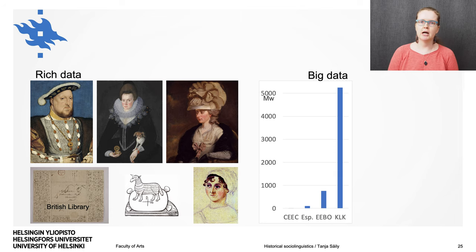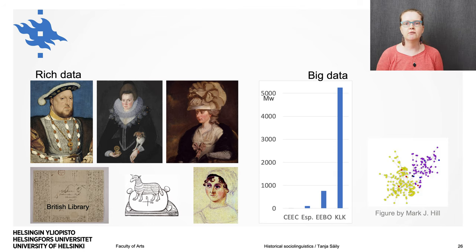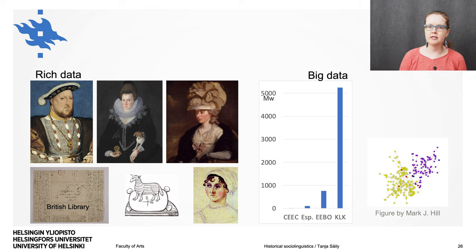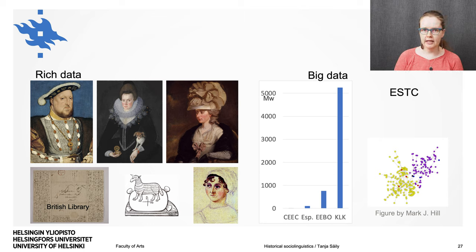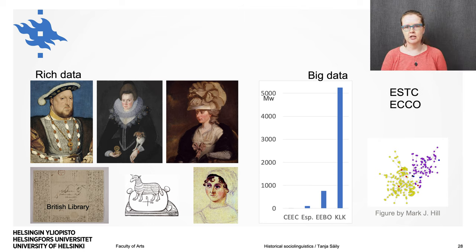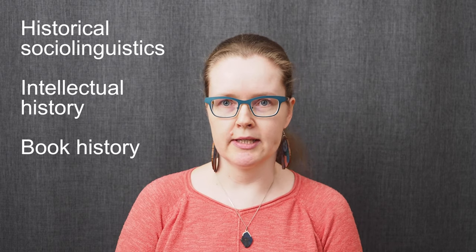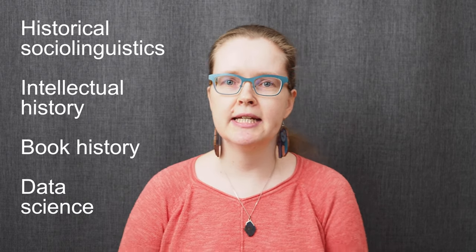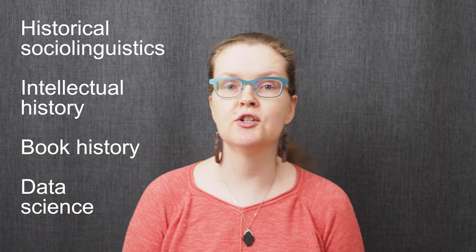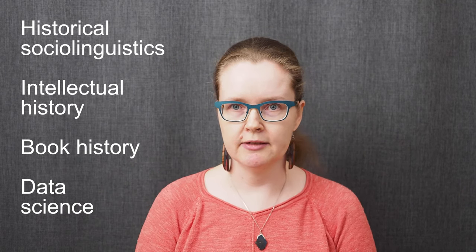For instance, in my current project we're studying how innovations related to the language of commercial society spread in 18th century publishing networks, by using metadata from the English Short Title Catalogue combined with the full text database of 18th Century Collections Online. This research is at the intersection of historical social linguistics, intellectual history, and book history, and it also requires data scientists to develop new ways of analyzing this big and messy data.